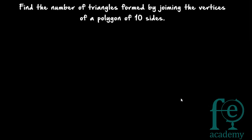Now let's find out a generalized formula. A polygon of m sides will have m vertices — that is the first point to remember. A square has four sides and a square has four vertices.